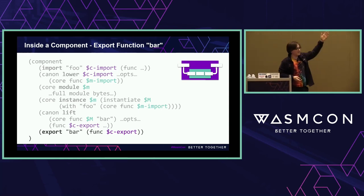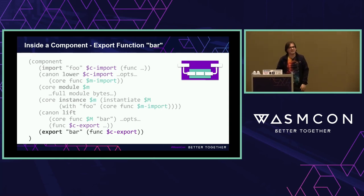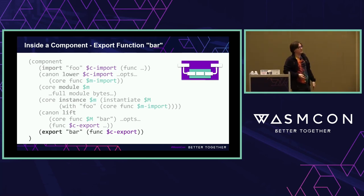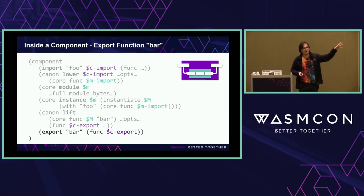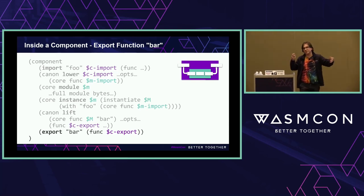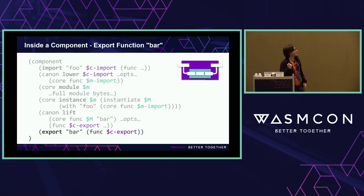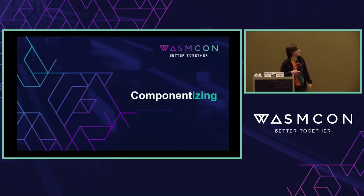Then we have a lift on the other side that takes the core function exported by the module and lifts it, telling the component model how to understand it. This has all the same options as the lower, as well as potentially a post-return function that tells you what to call to clean up things after you're done reading the values from an export. And finally, we export it at the component model level. You can have as many modules as you want — we'll see examples later where there are more modules inside a component and even components inside components.